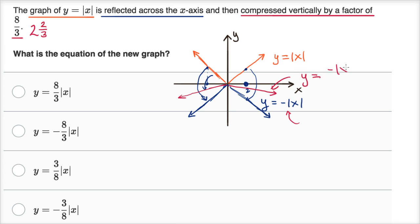the negative absolute value of x. And since we're compressing by eight-thirds, we would divide that by eight-thirds. Or another way to think about it, dividing by eight-thirds is the same thing as multiplying by the reciprocal. So negative three-eighths times the absolute value of x.